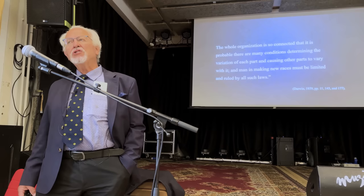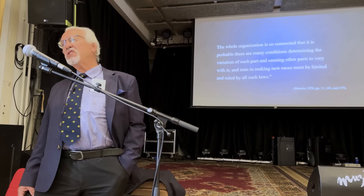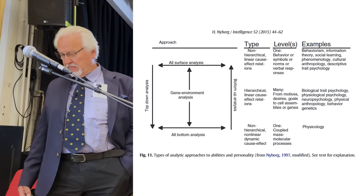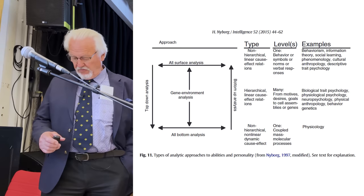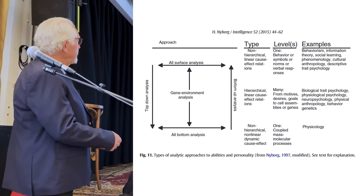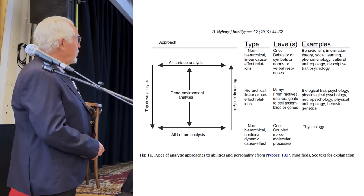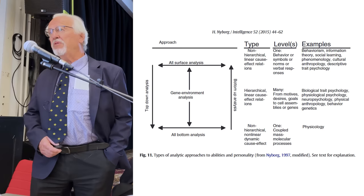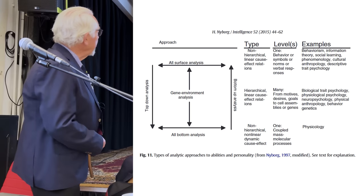Darwin added that each race had a price to pay, which suggests that if races differ, they differ in allocation of energy to different traits. So it's important when we start with this complexity to agree on what level we are on. If you act at the all-surface analysis — that's behaviorism, information theory, social learning, phenomenology — you see there are many books on the shelves of the parents and the kids tend to be bright. Ergo, it's because of the books. That's an example of all-surface analysis.